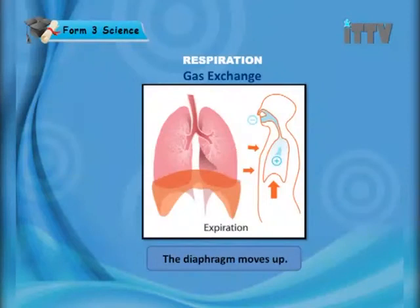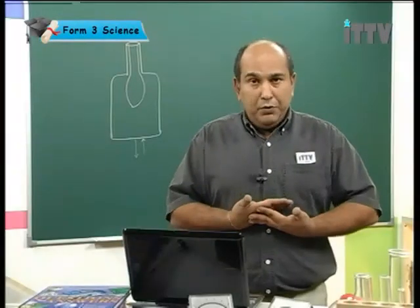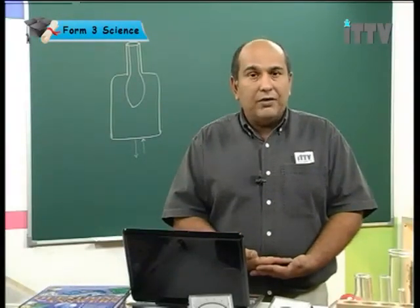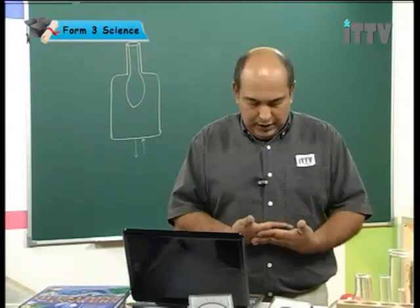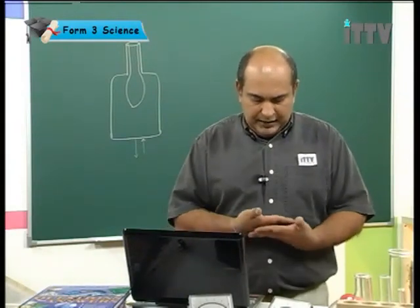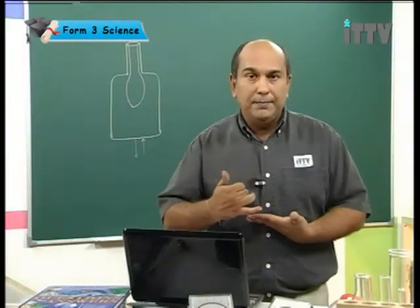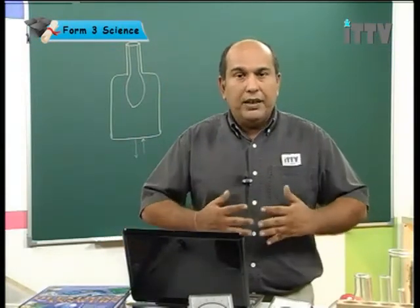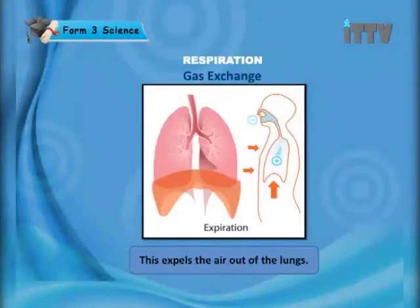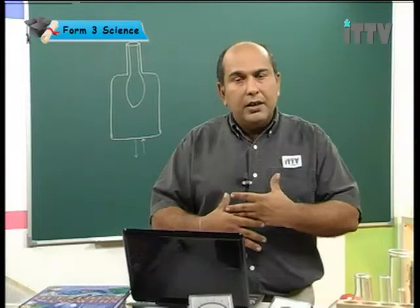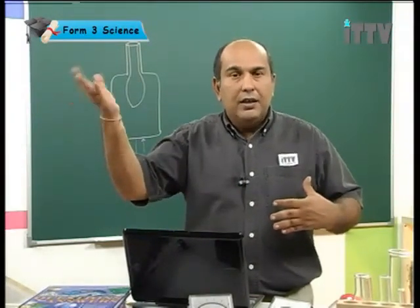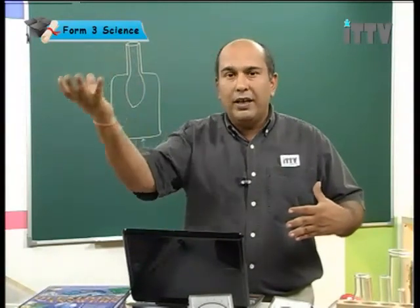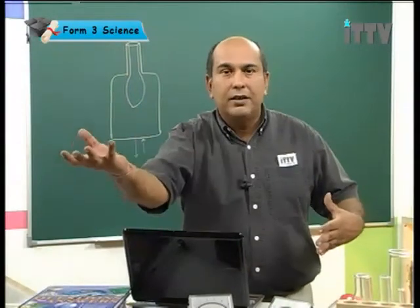The diaphragm curves back up. Earlier, our diaphragm moved down and became flat — now it relaxes and goes back up to its original position. As the hands come back up, the volume is becoming smaller. This reduces the volume in the chest cavity and increases the pressure. The volume is decreasing and the pressure is going up. This expels the air out of the lungs — when we have high pressure inside compared to atmospheric pressure outside, air moves from high pressure inside to lower pressure outside.